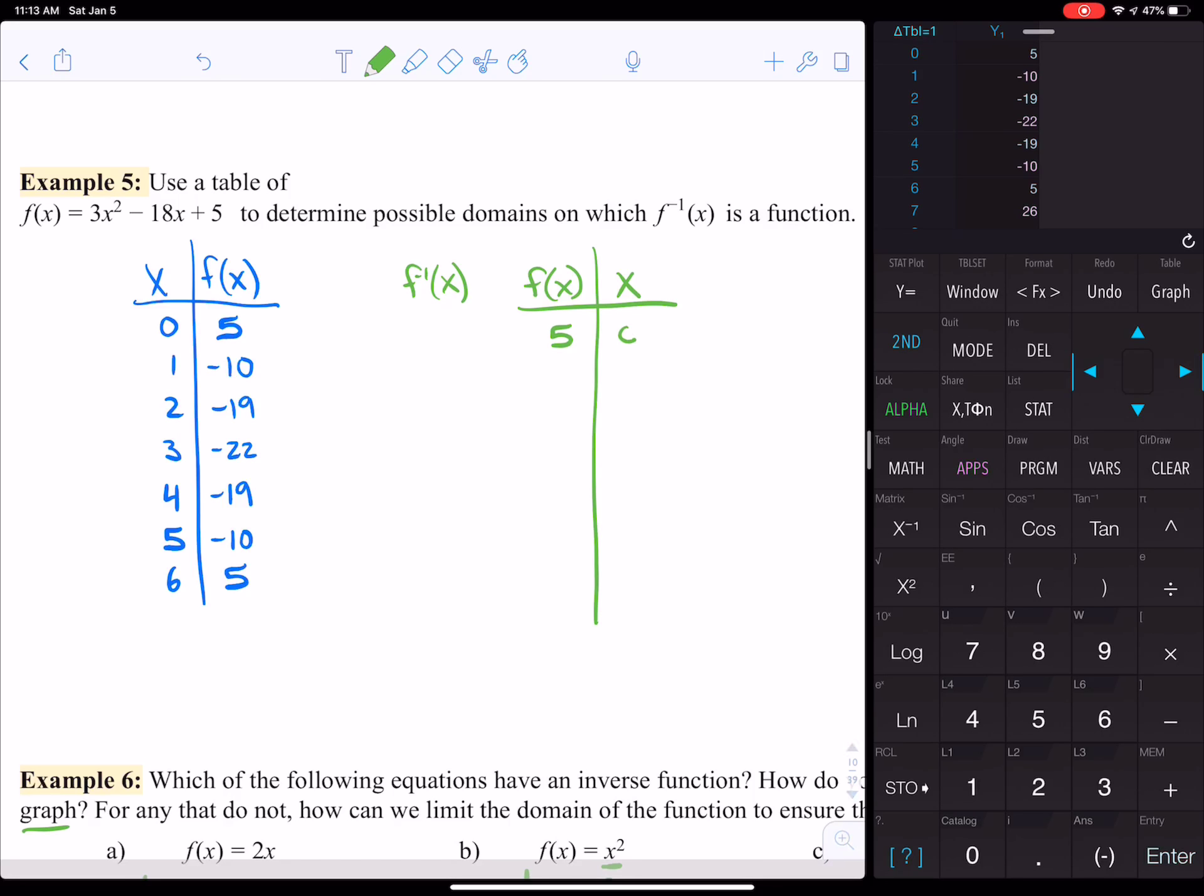So we're going to switch them and put f(x) first and x second. So we're going to say that goes with 5, 0. I'm just switching the values that are over here. Negative 10, 1. Negative 19, 2. Negative 22 goes with 3. Negative 19, 4. Negative 10, 5, and 5, 6.